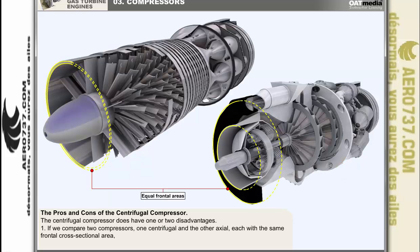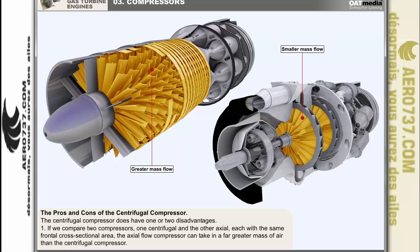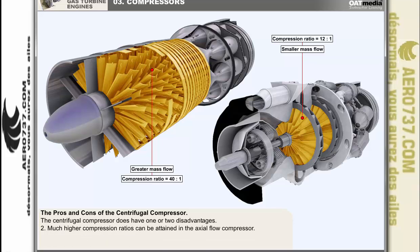Firstly, if we compare two compressors — one centrifugal and the other axial — each having the same frontal cross-sectional area, we would find that the axial flow compressor can take in a far greater mass of air than the centrifugal compressor. And secondly, that much higher compression ratios can be attained in the axial flow compressor.